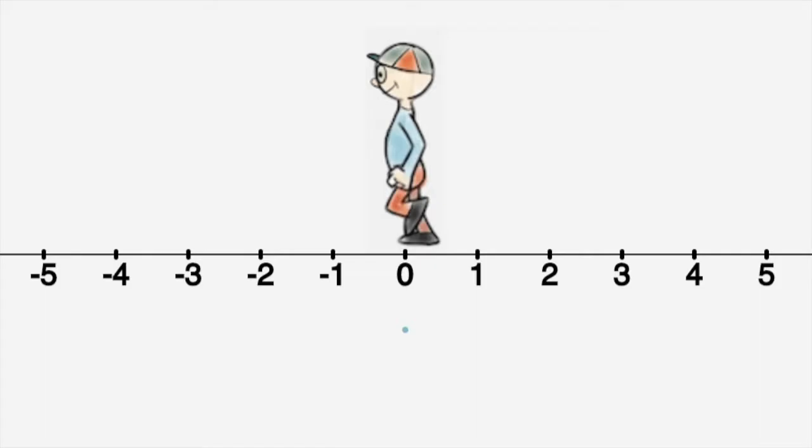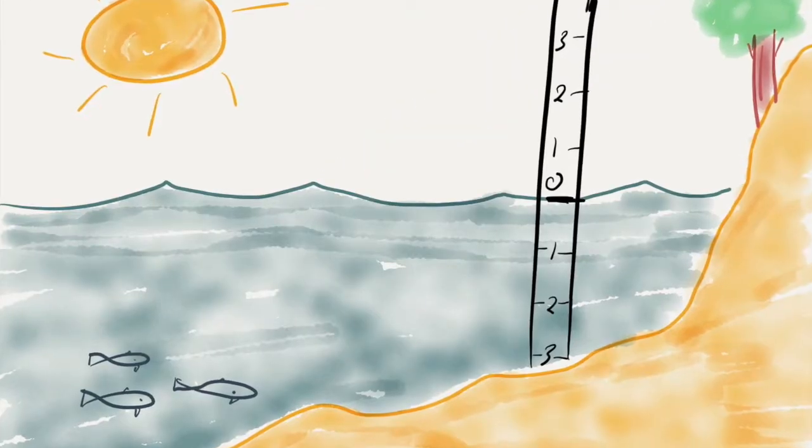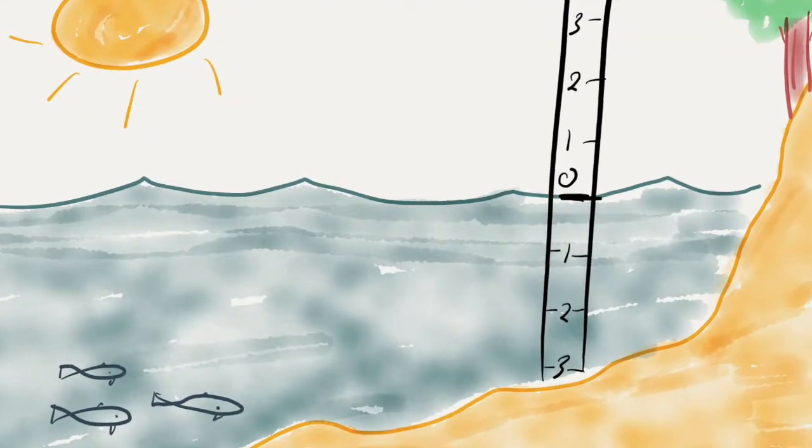A negative number is in the opposite direction to a positive number. For example, we have temperatures above and below zero, heights above and below sea level, etc.